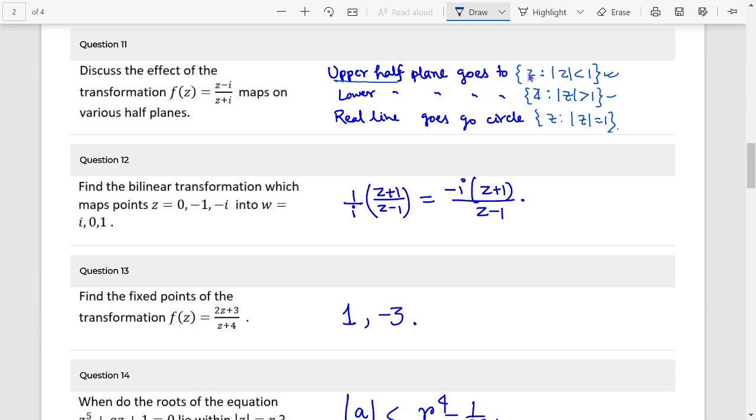Next we check bilinear transformation. So this is minus i into z plus 1 by z minus 1.